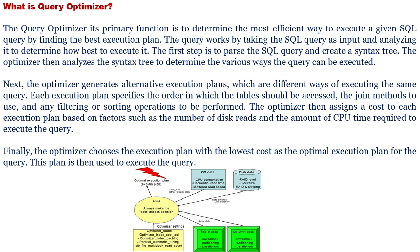Finally, the optimizer chooses the execution plan with the lowest cost as the optimal execution plan for the query. This plan is then used to execute the query. Whenever the SQL query is running, it will go for the execution plan with the lowest cost.